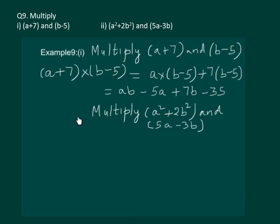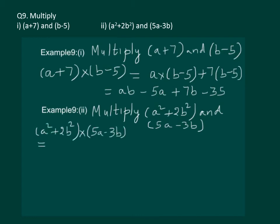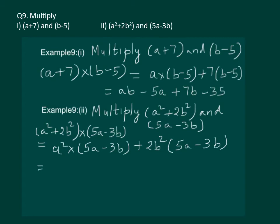Now let us start with example 9, second part. Here we have to multiply (a square plus 2b square) with (5a minus 3b). Distributing the first bracket, we get a square multiplied by (5a minus 3b), plus 2b square multiplied by (5a minus 3b). Solving further we get 5a cube minus 3a square b plus 10ab square minus 6b cube. Again there are no like terms, hence this is the required answer.